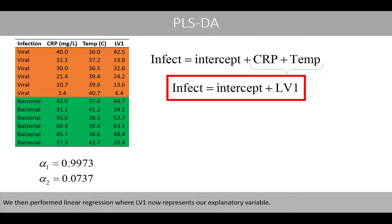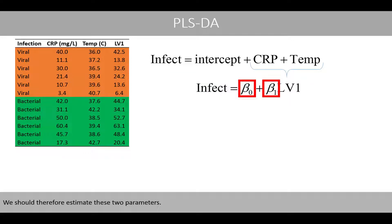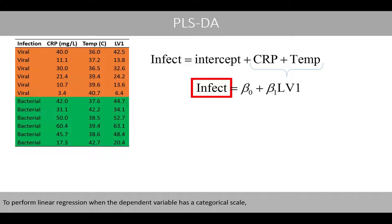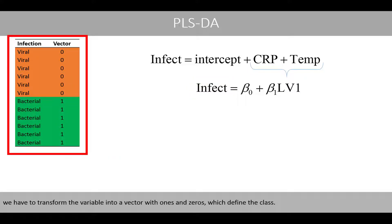We then perform linear regression where LV1 now represents our explanatory variable. We should therefore estimate these two parameters. To perform linear regression when the dependent variable has a categorical scale, we have to transform the variable into a vector with ones and zeros, which define the class.